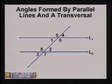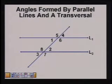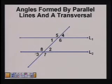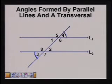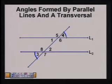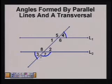Alternate exterior angles lie outside the lines on opposite sides of the transversal. Angles 3 and angle 4 are alternate exterior angles. Also, angle 7 and angle 5.